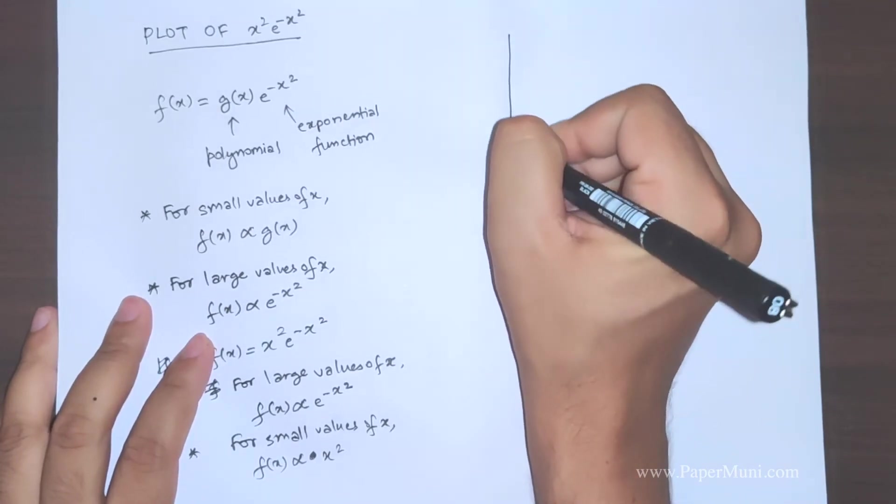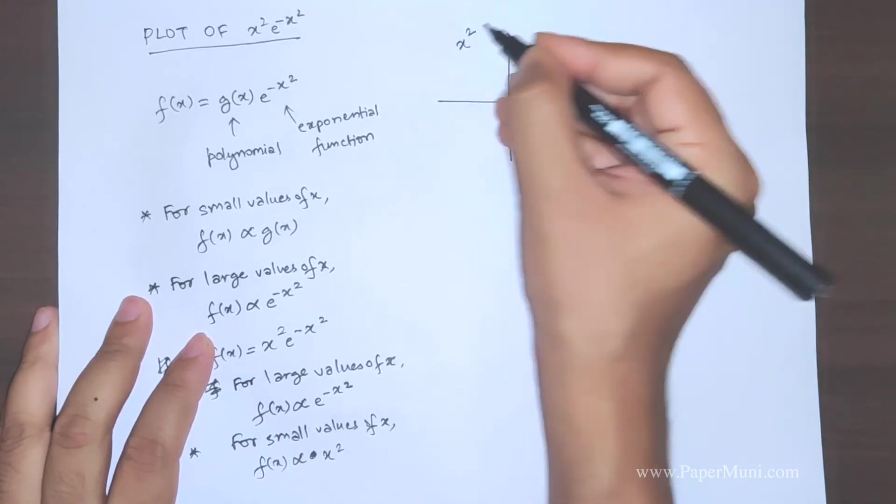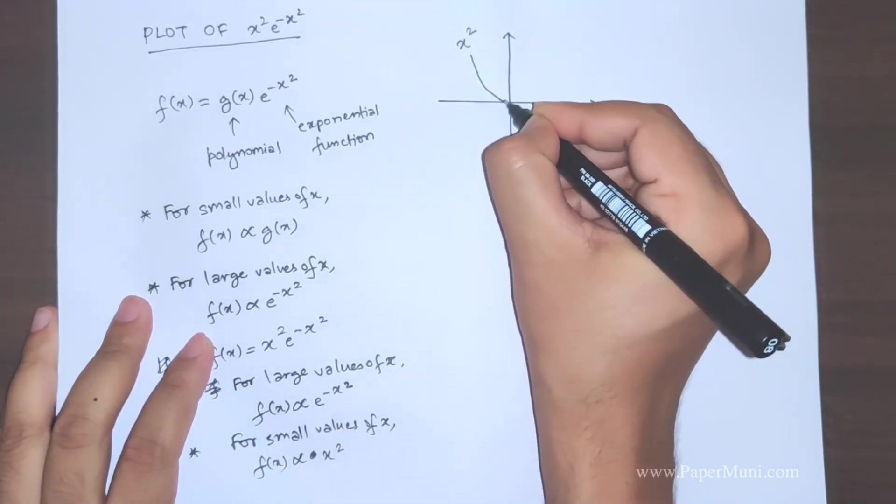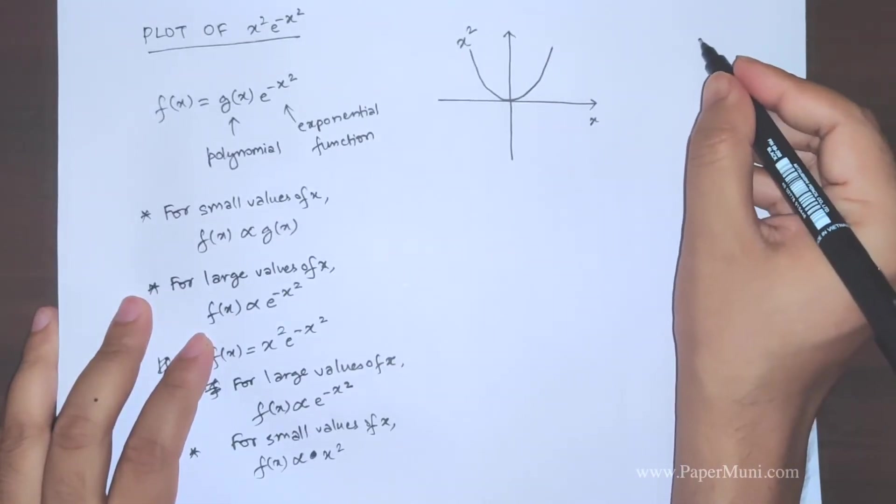So what is happening here is we will draw the graph of x square which is a parabola, and the graph, this is a parabola passing through the origin.